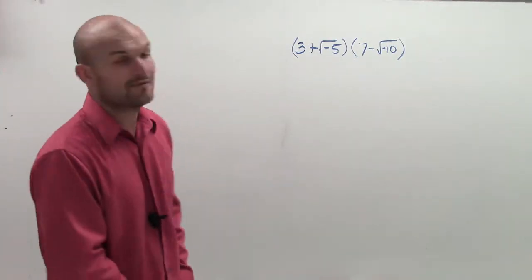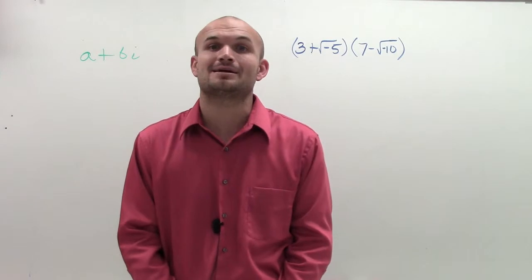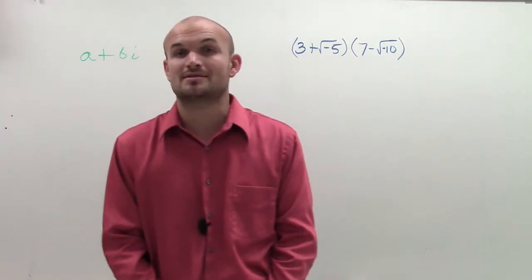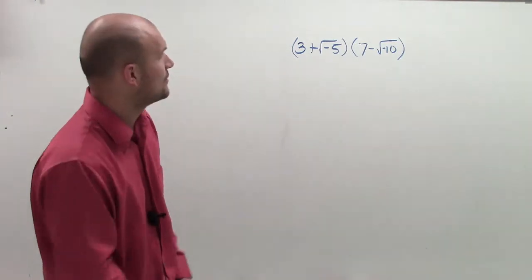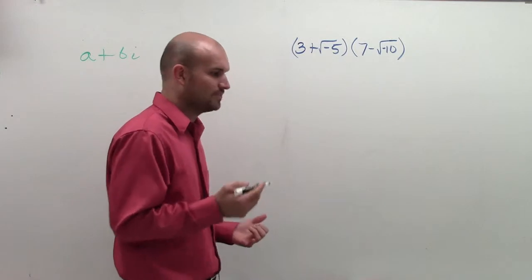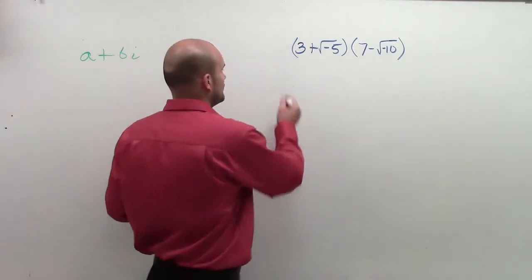What I have here is a binomial with some square roots of negative numbers, so that means I'm going to have to deal with some complex numbers at the end. Previously I showed you a problem very similar to this and I used the square method to multiply binomials. You can also use what we call the FOIL method.